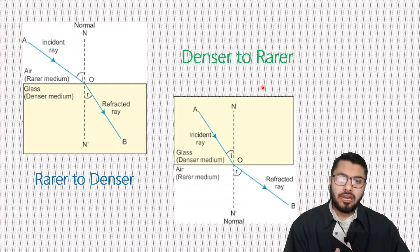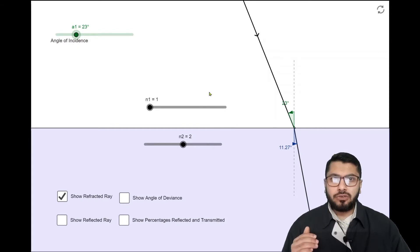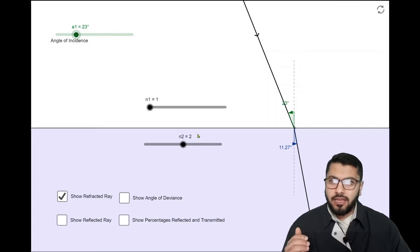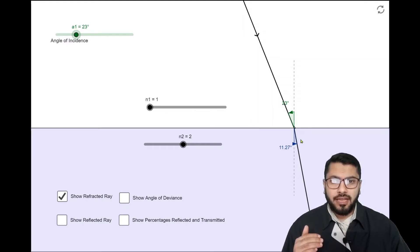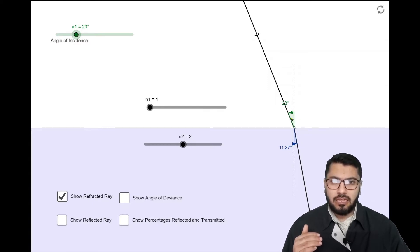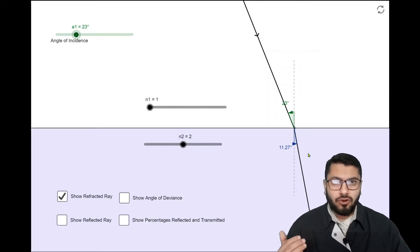Now I have taken two mediums: N1 is my air with a refractive index of 1, and N2 is my glass with a refractive index of 2 for example. So air is my rare medium and N2 is the denser medium. You can see the incident ray hitting the normal at an angle of 23 degrees, and it is deflected towards the normal in the denser medium. The angle of refraction is less than the angle of incidence.